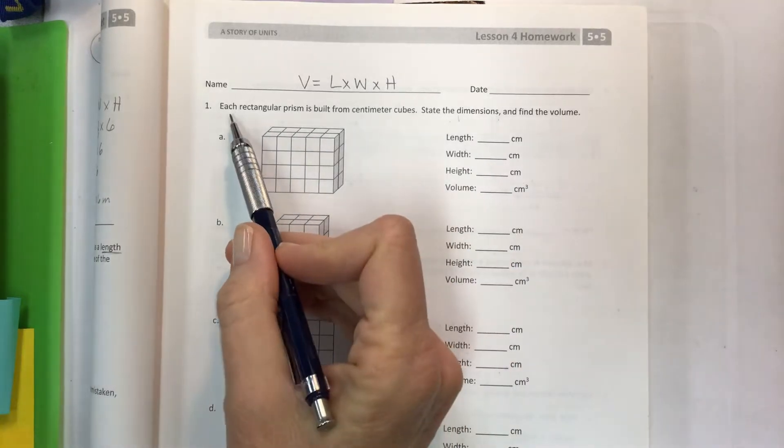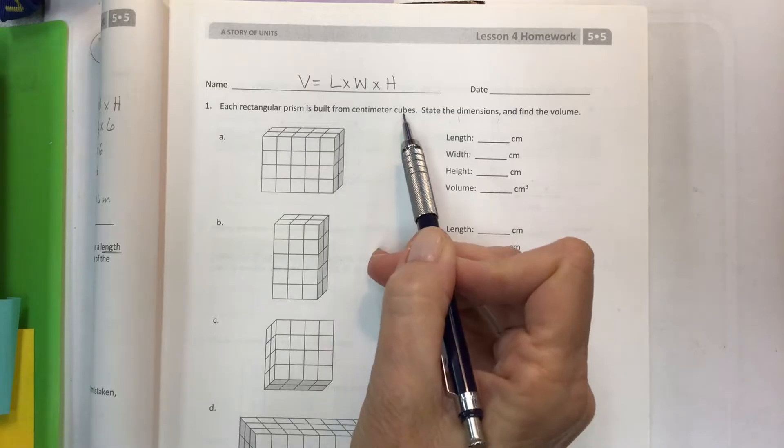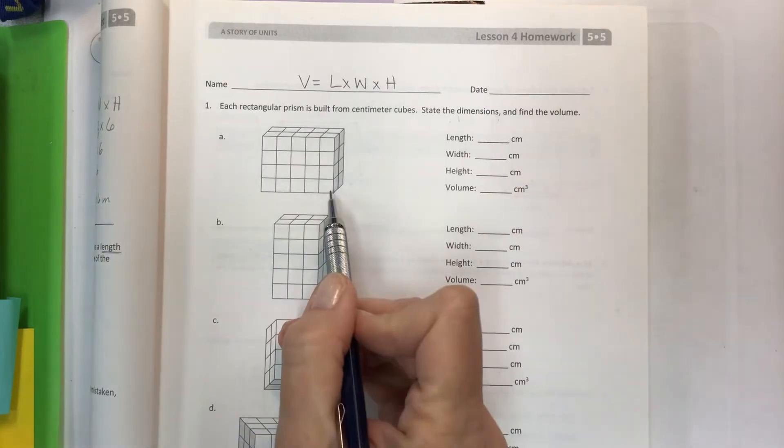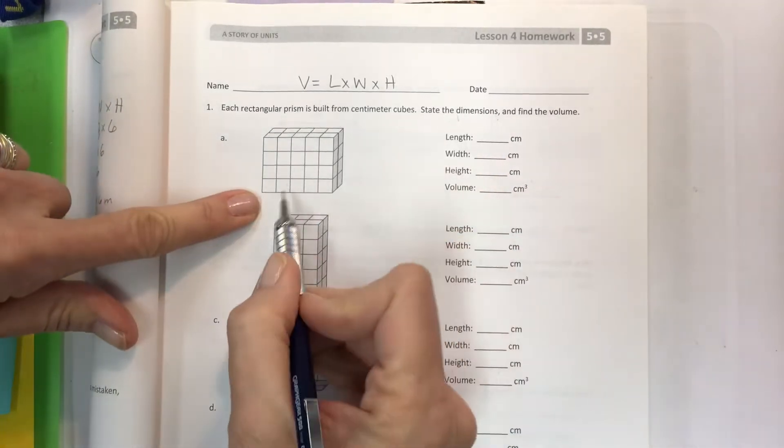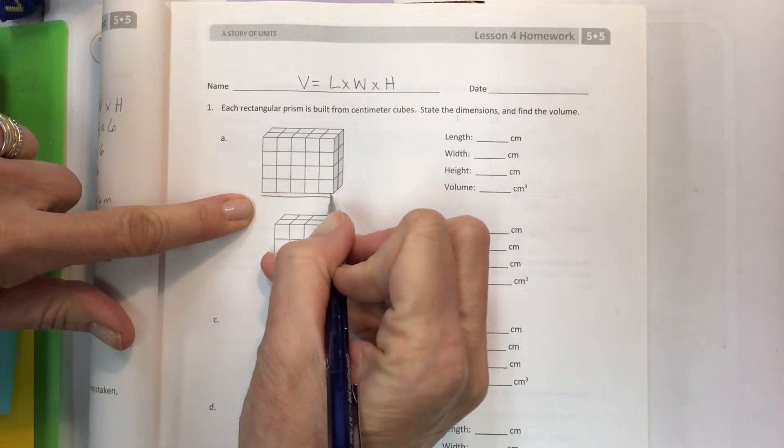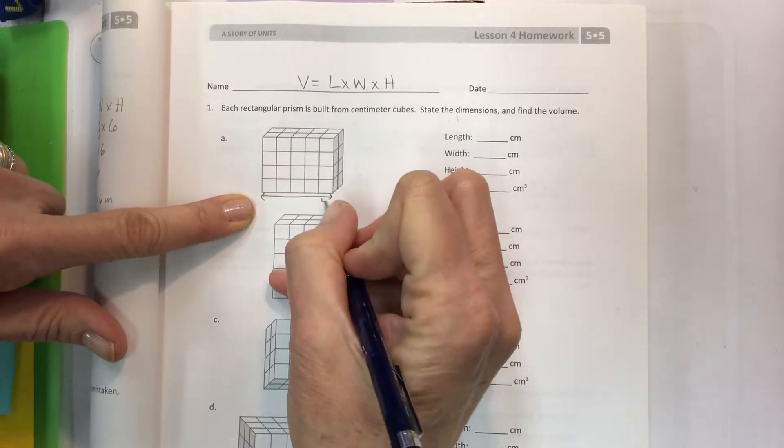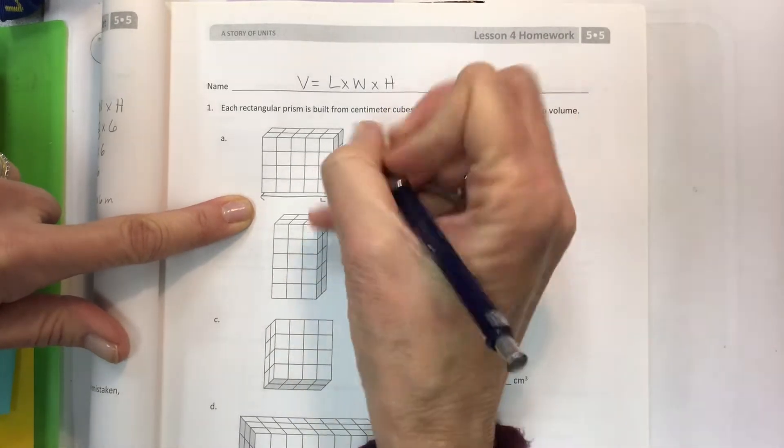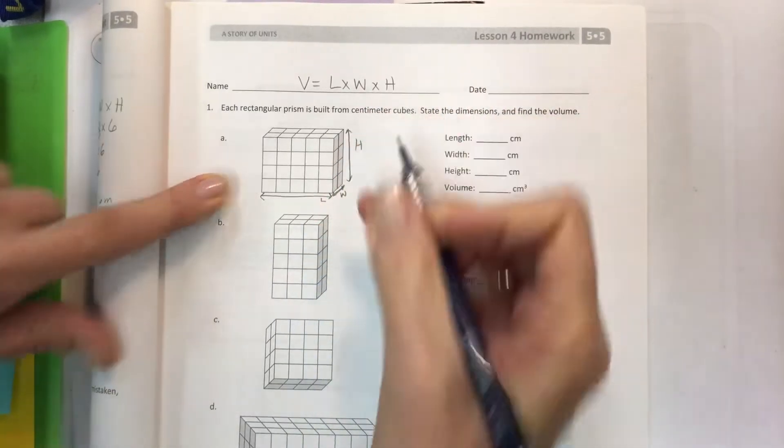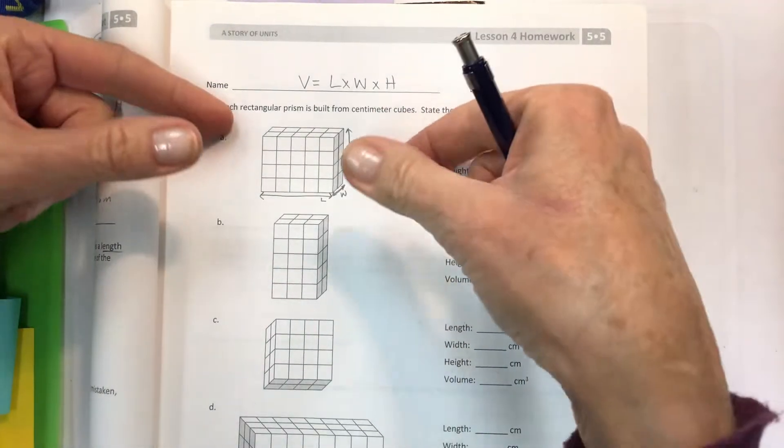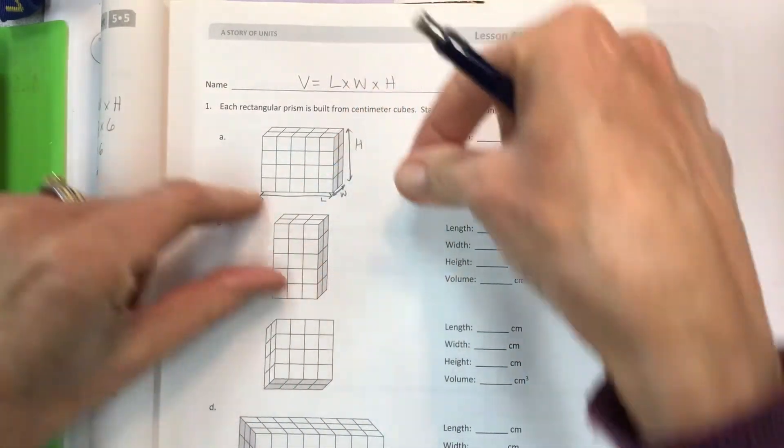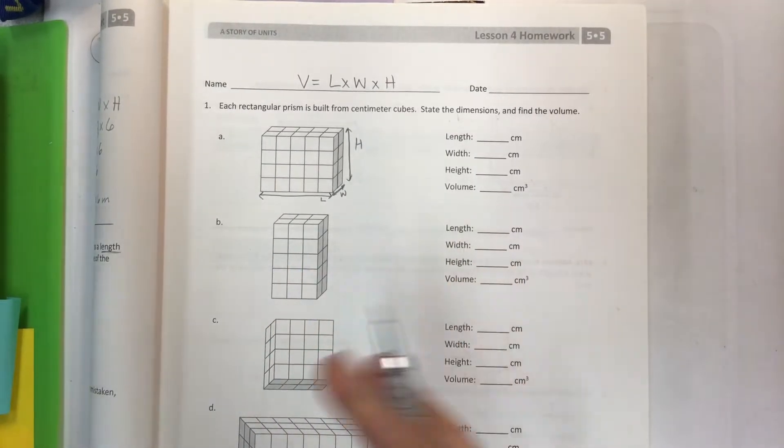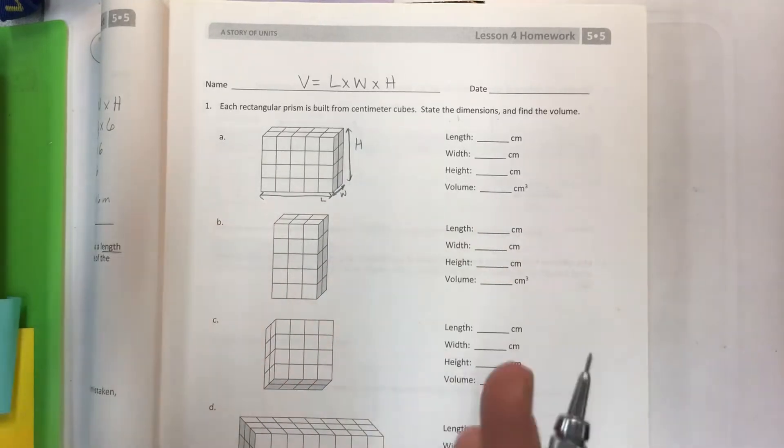So for today we've got each rectangular prism is built from centimeter cubes. These are single centimeters on each face. State the dimensions and find the volume. It's counting and multiplying. So I'm going to be pretty consistent with using this direction. I usually call this my L length and this direction is my width W and this direction is going to be my height and I try to be consistent. Now in a previous lesson we talked about how you can flip your rectangular prisms so that is also an option and you can call any of these dimensions anything you want, but for consistency just try to keep it the same.